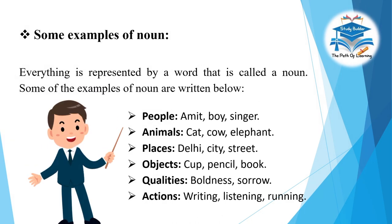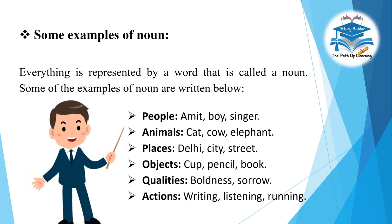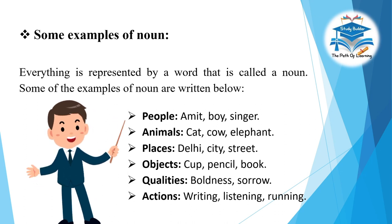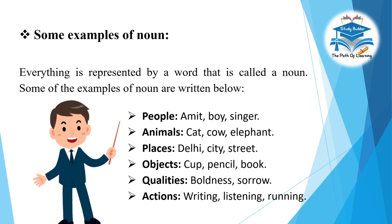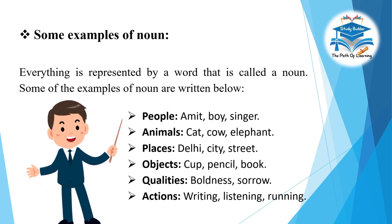Some examples of noun — everything is represented by a word that is called a noun. Examples include: People — Amit, Boy, Singer; Animals — Cat, Cow, Elephant; Places — Delhi, City, Street; Objects — Cup, Pencil, Book; Qualities — Boldness, Sorrow; Actions — Writing, Listening, Running.